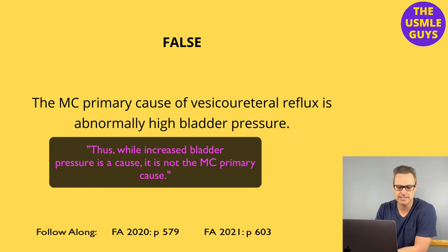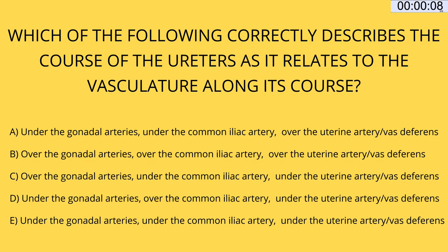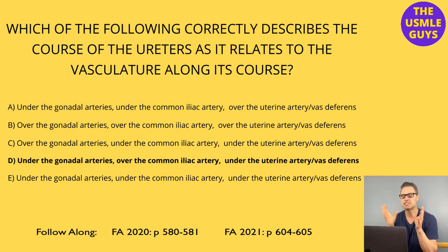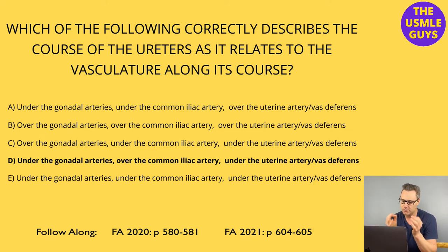Let's move on to the next question — a multiple choice. As always, hit the pause button, figure this one out, and then come on back. The correct answer here is D. This is a super high-yield question. Knowing the course of the ureters is so important, and it tricks a lot of students because some students just glance over it because it seems easy — and therefore it's highly likely to be tested.